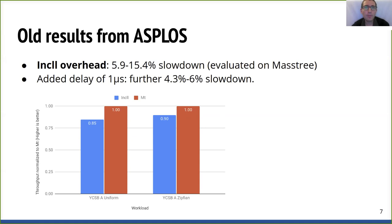For this talk, I'm using the Masstree data structure for evaluation, which is a combination of B+ tree and trie. The figure presents the throughput of write-intensive YCSB workloads for both baseline Masstree and the in-cache line logging approach. We use the uniform access pattern to model random accesses and Zipfian to model popular key accesses, with 20 million initial keys and 8 worker threads. In-cache line logging has the highest overhead in the YCSB-A write-intensive workload. The slowdown is 15 percent for the uniform workload and 10 percent for the Zipfian workload.